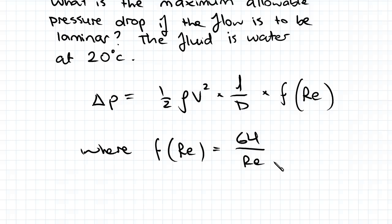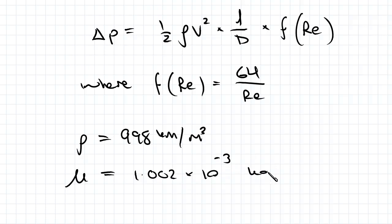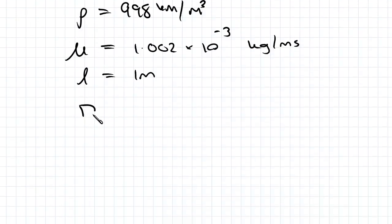Now we need our fluid properties, which we know from the question - it's water at 20 degrees Celsius. So for water, rho is 998 kg per meter cubed and mu is 1.002 times 10 to the minus 3 kg per meter second. The distance between the pressure gauges L is 1 meter, and the diameter of the pipe is 1mm, which is 0.001 meters.